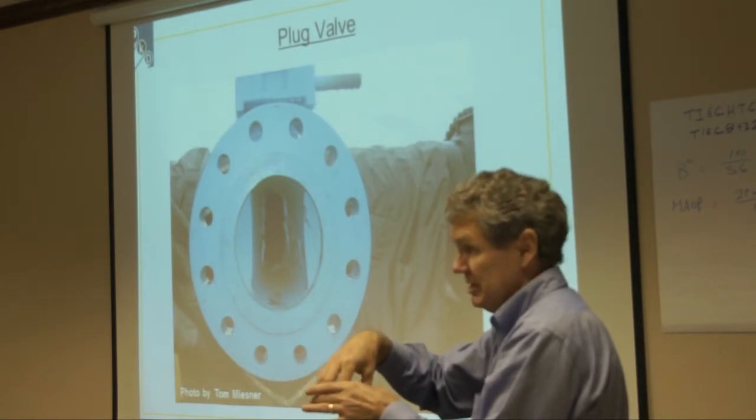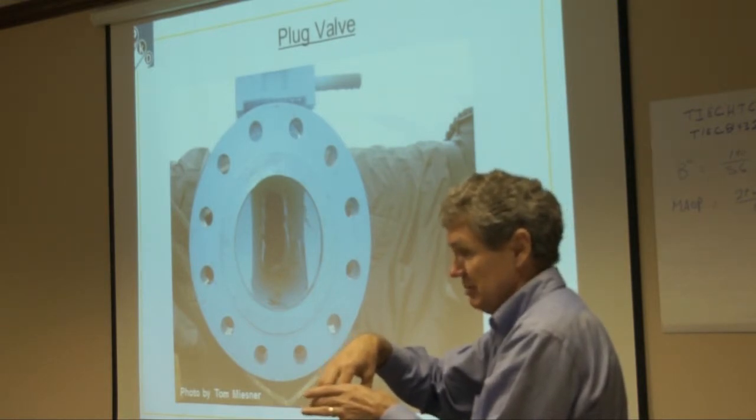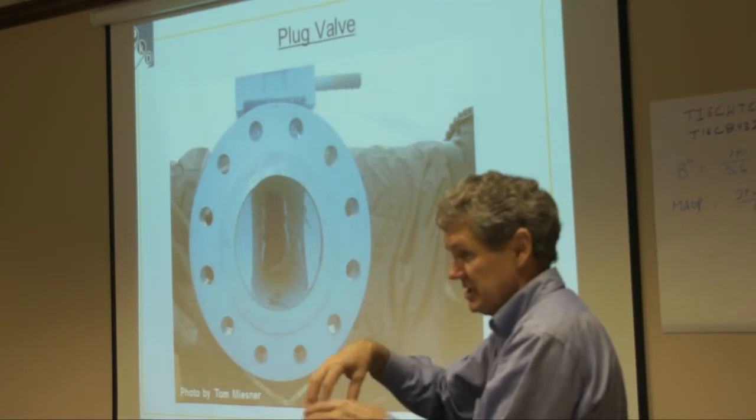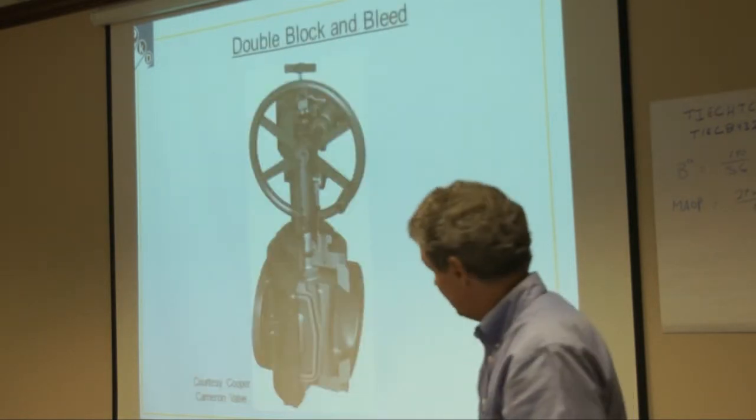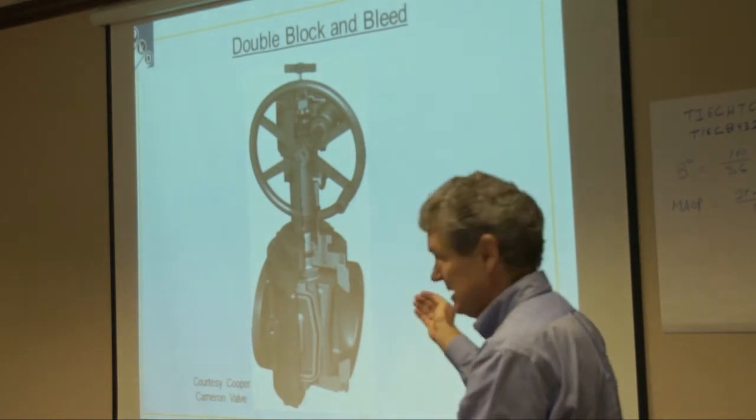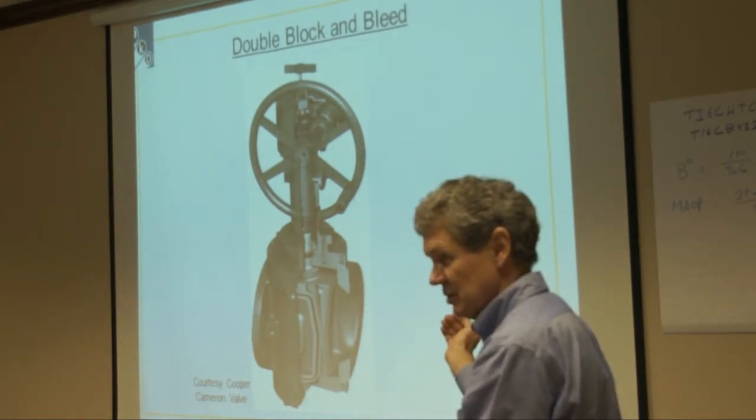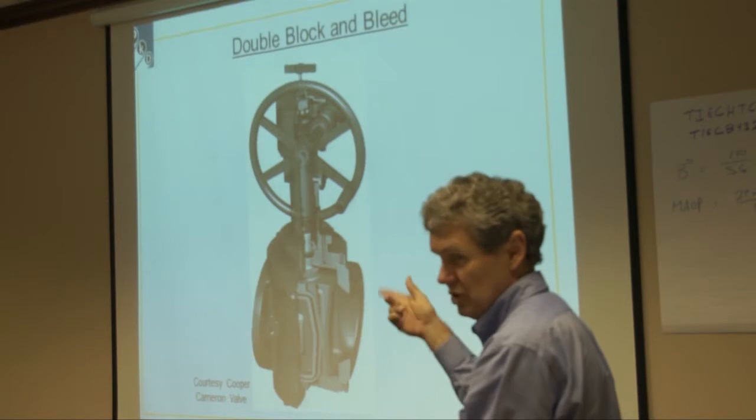So in the double block and bleed valve, like a general twin seal double block and bleed valve, that's what it does. You have two force fits, one on each side, and then you can open the cavity with a little tap and verify there's no flow past there.